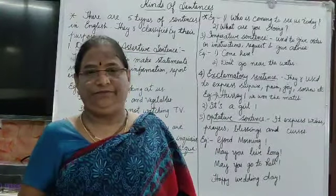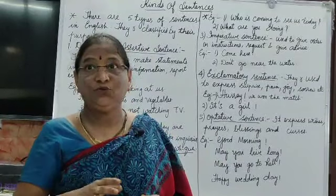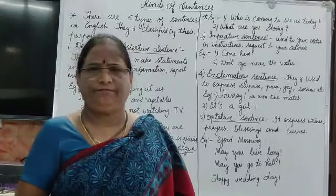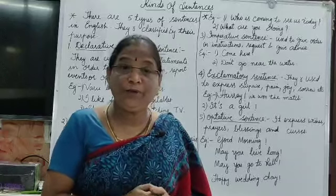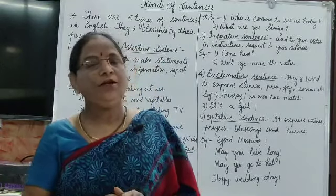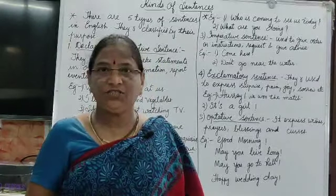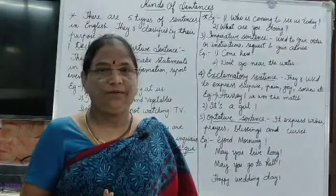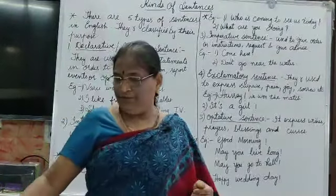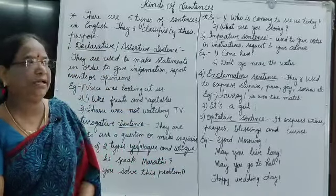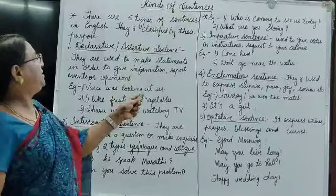Next is exclamatory sentence, which is used to express joy, sorrow, or sudden feeling, and it takes an exclamation mark. Then comes optative sentence, which is used to express wishes, blessings, curses, or prayers. So let me explain these kinds of sentences through examples. Now let's come to the topic: kinds of sentences.